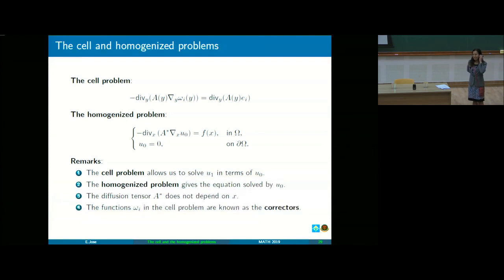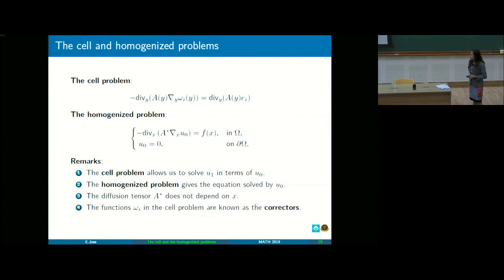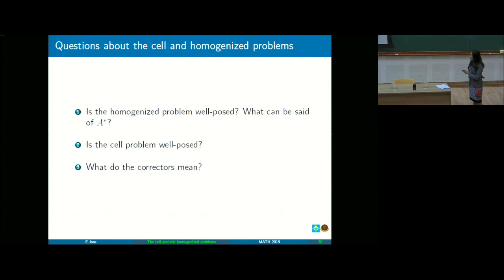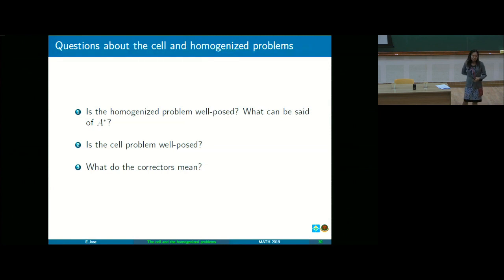Any questions regarding these remarks? We have some questions to answer about the cell and homogenized problems. First: is the homogenized problem well posed? And what can be said of A asterisk, our effective diffusion tensor? Next: is the cell problem well posed? And finally, what do the correctors mean? Those are good questions that we want to ask. We will answer them in reverse order — first we tackle the correctors.